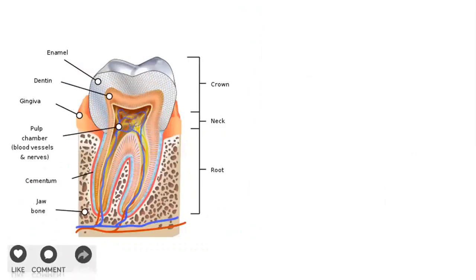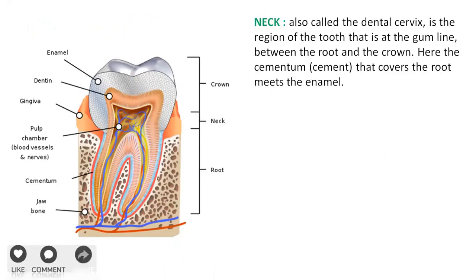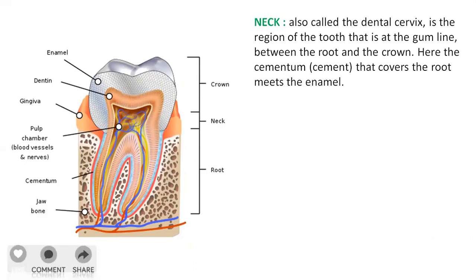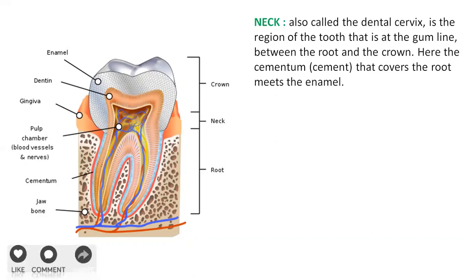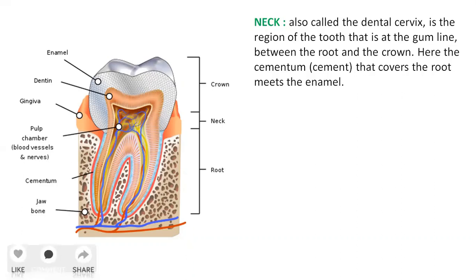Out of the three parts — crown, neck and root — the neck is the region which connects the crown with the root. The neck is also called the dental cervix and it is the region of the tooth at the gum line between the root and the crown. Here, the cementum that covers the root meets the enamel.